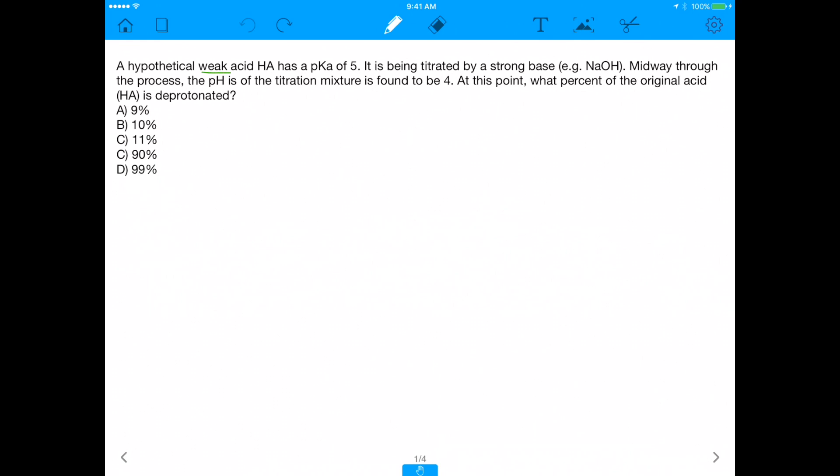It says a hypothetical weak acid HA has a pKa of 5. It is being titrated by a strong base, sodium hydroxide. Midway through the process of the titration, the pH of the titration mixture is found to be 4. At this point, what percent of the original acid, HA, is deprotonated?